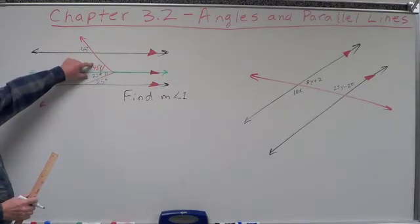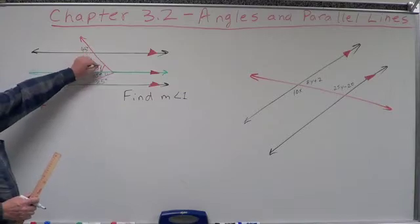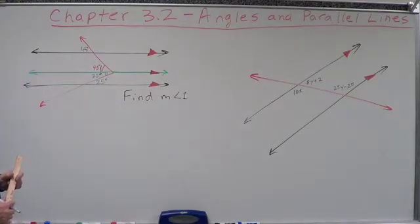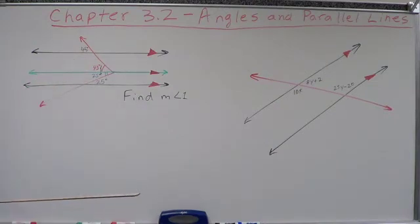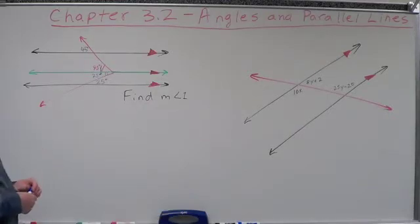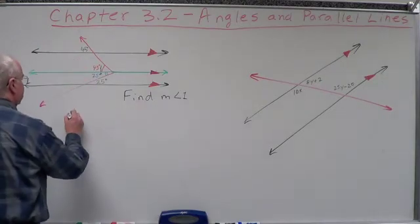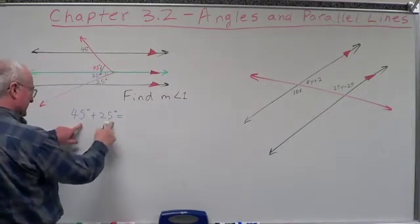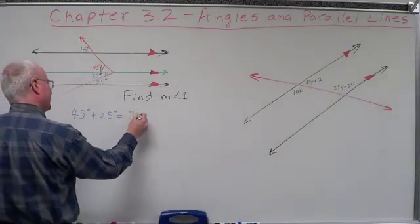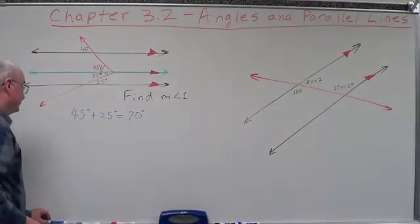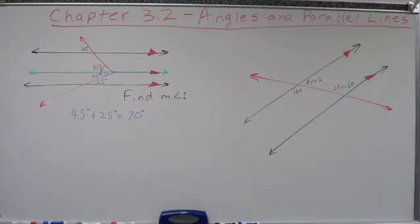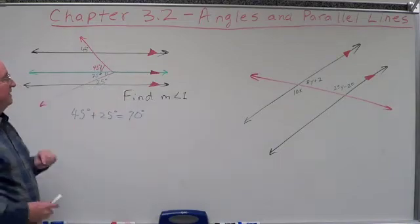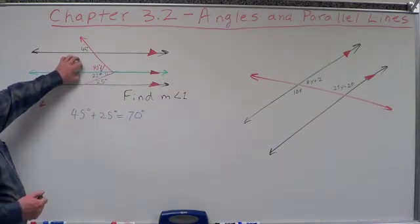What tells us that we can add this 45 degrees and this 25 degrees together to get angle 1? The angle addition postulate says if I have two angles, I can add them together to get the measure of their composition. So I add those together: 45 degrees plus 25 degrees equals 70 degrees. That's a way to draw an auxiliary line that helps us determine what these angle pairs are.